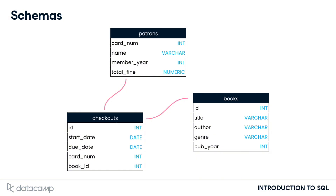Now that we're familiar with data types, we can look at a database schema. Schemas are often referred to as blueprints of databases. A schema shows a database's design, such as what tables are included in the database and any relationships between its tables. A schema also lets the reader know what data type each field can hold. The schema for our library database shows the varchar data type is used for strings like book title, author, and genre. We can also see that the patrons table is related to the checkouts table, but not the books table.